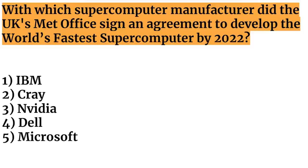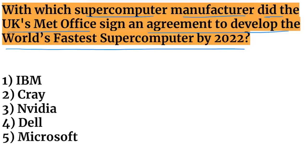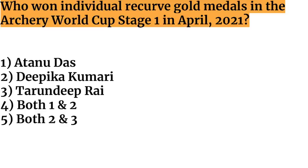Next question: with which supercomputer manufacturer did the UK's Met Office sign an agreement to develop the world's fastest supercomputer by 2022? The UK's Met Office signed with Microsoft to develop the world's fastest supercomputer by 2022.